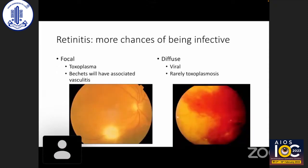Retinitis has a higher chance of being infective. It can be focal or diffuse. Focal retinitis can be due to toxoplasma; Behçet's can also cause focal retinitis but it is usually associated with some vasculitis. Toxoplasma characteristically shows a 'headlight in the fog' appearance — very dense vitritis overlying a bright yellow-cream lesion, as seen in the first picture. Diffuse retinitis is more likely viral, and only very rarely secondary to toxoplasmosis.